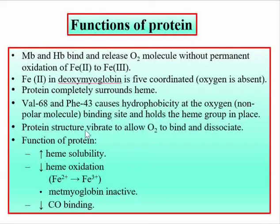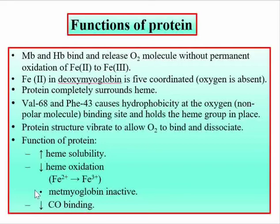The main functions of the globin protein are: it increases heme solubility, decreases permanent oxidation of Fe2+ to Fe3+, inactivates met myoglobin formation, and lowers the binding of CO at the heme site.